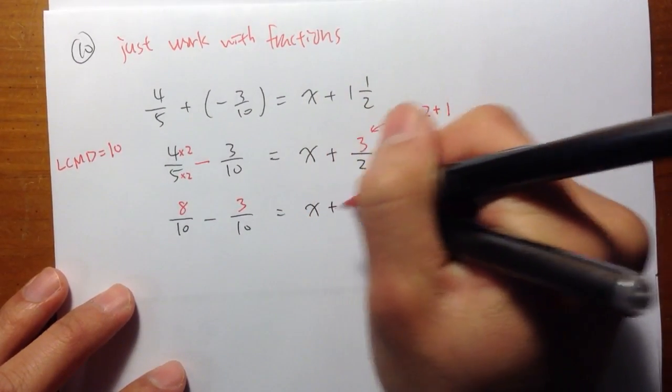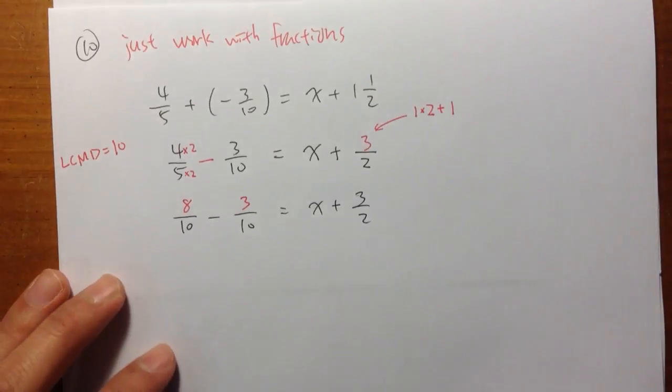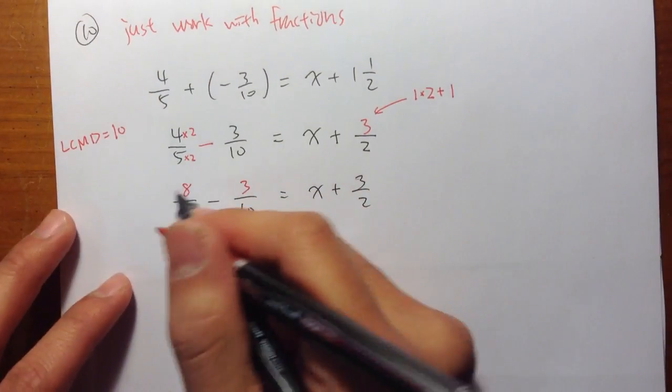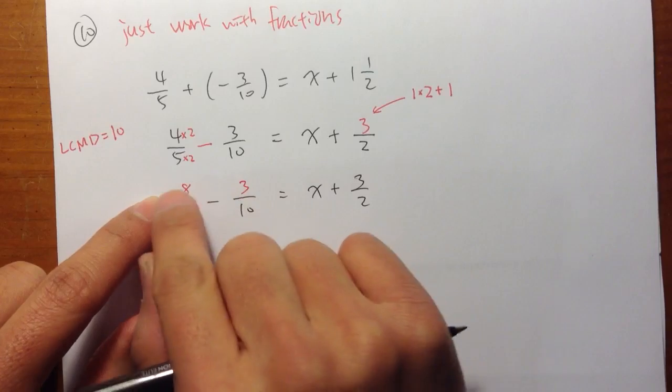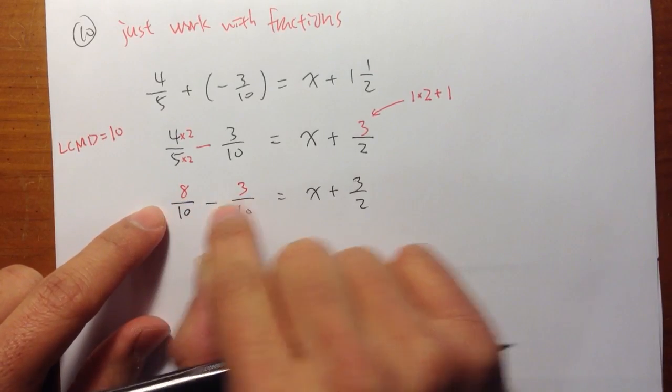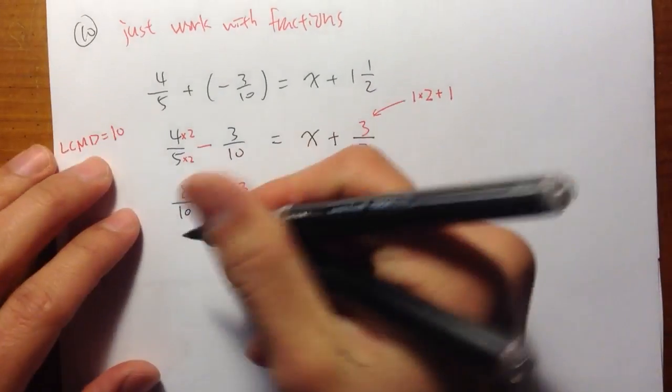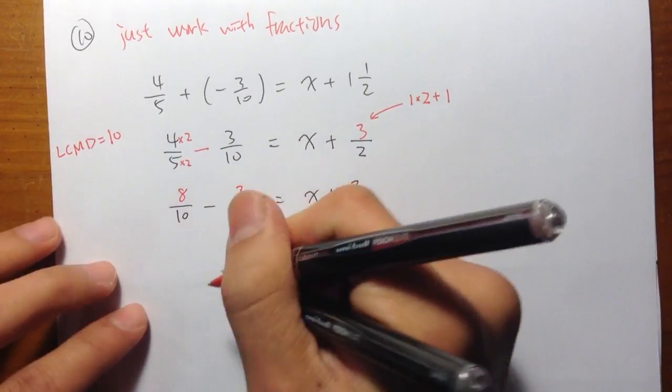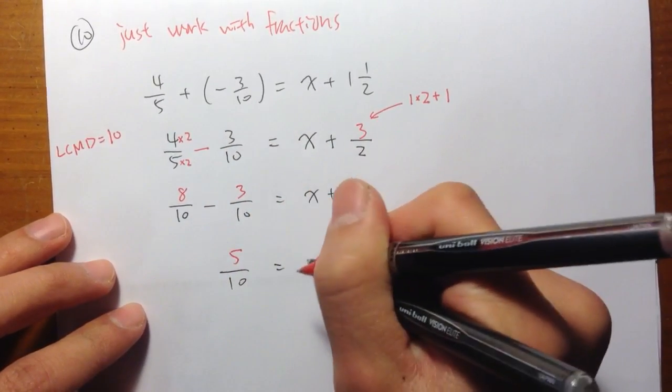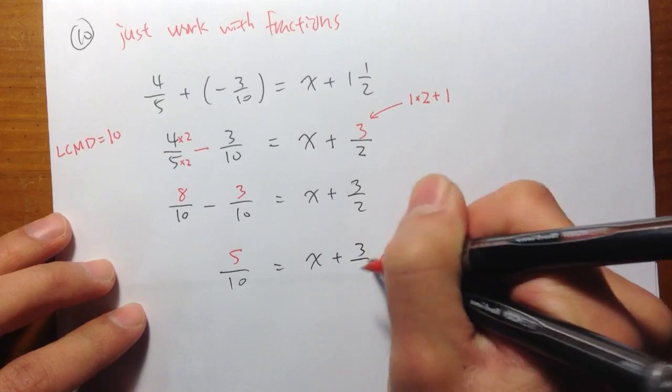So on the right-hand side, I still didn't do anything. So let me just write this. Okay, and right here, once they have the same denominator, we just need to subtract the top. 8 minus 3, which is positive 5. So I have a 5. So all this together becomes a 5 over 10, which is equal to x plus 3 half.